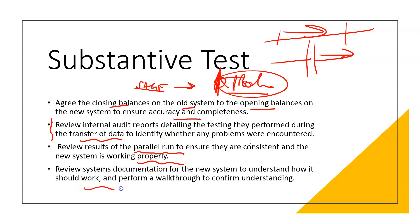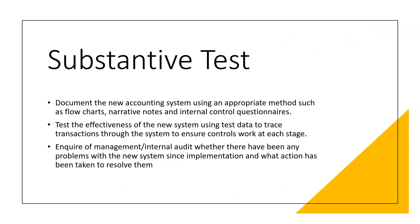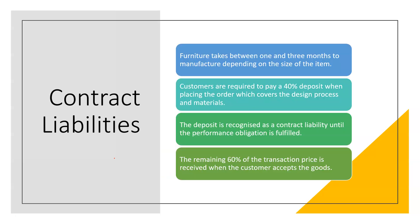I've written: understanding the new system documentation and performing a walkthrough to understand the system. Documenting the new system via flowcharts, narrative notes, and then testing that system with test data - throwing dummy data at it to see whether or not it works, trying to test the integrity of the system. It should show the controls are working at each stage, and looking at management to see if there were any problems there.